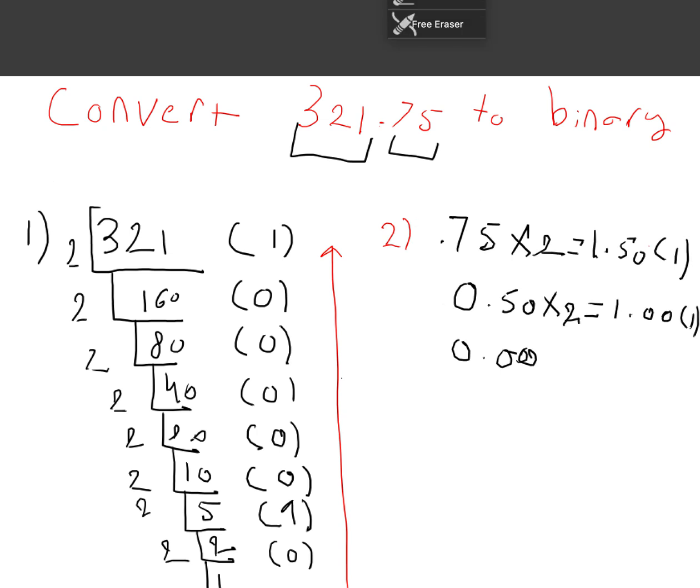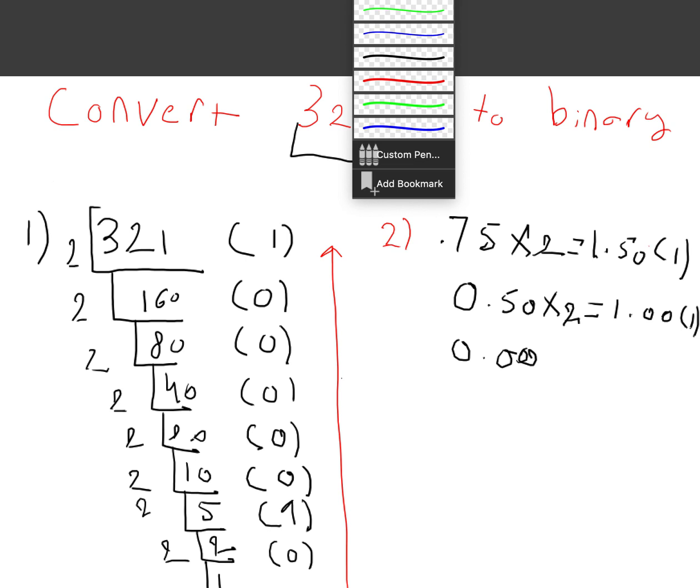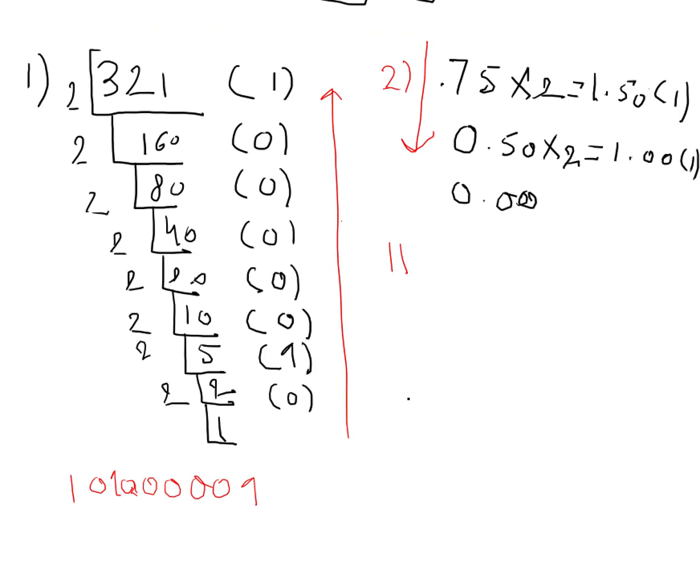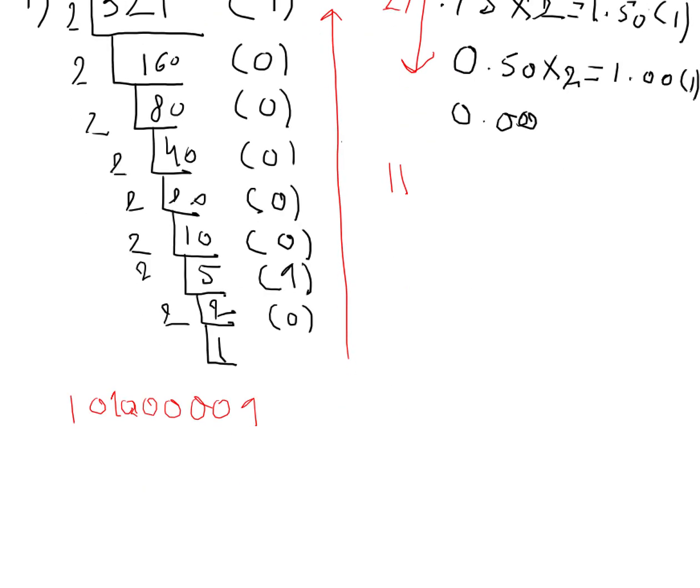And the way this one works compared to the other one is you're going to want to read down like this. And if you read it down, you're going to find that the answer is 1.1. So the binary representation of the whole system is the first number you have for your 321, and you're going to put a dot after the 321 binary representation, and then put the representation of the 0.75.